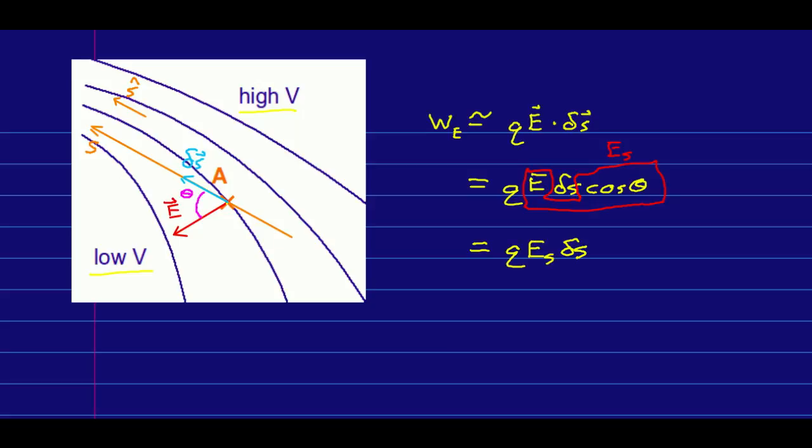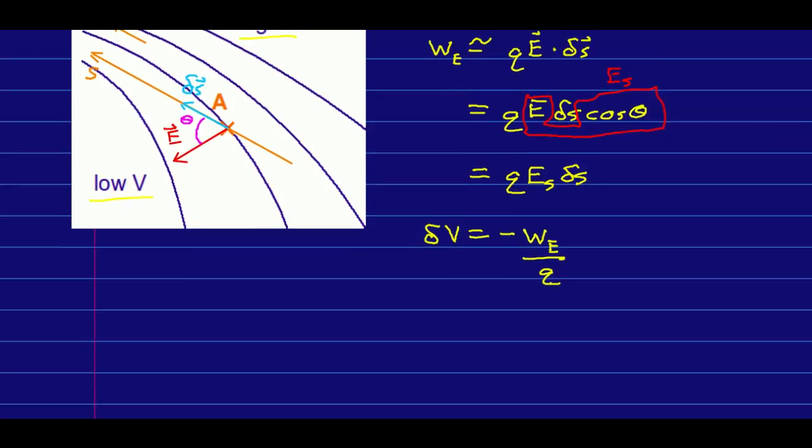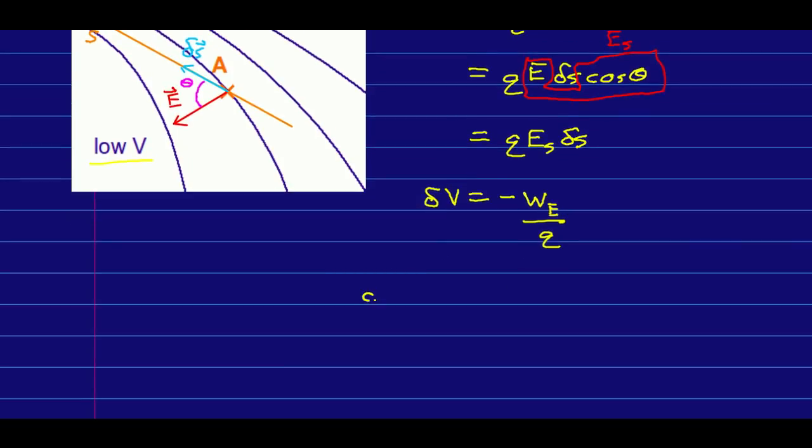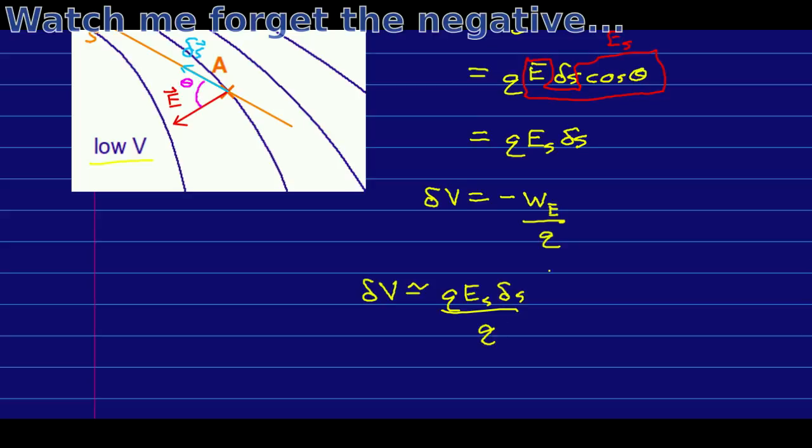The potential from A to the end of delta S will have changed by some small amount that I'll call delta V. And that would be equal to the negative of the electrostatic work done on the particle divided by the charge on the particle. And so that is approximately all of this expression over Q.